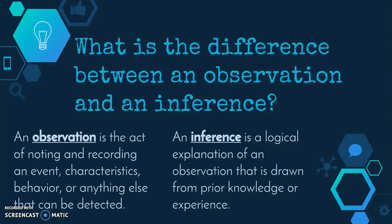So what's the difference between an observation and an inference? Observations are the things that you could see and were fact — the act of noting and recording an event, characteristics, behavior, or anything else that can be detected. No one can argue about the observations that you've made because you can show it using evidence. An inference is a logical explanation of an observation that is drawn from prior knowledge or experience. The inference is going to be an attempt to explain the observation that you've made, often justifying what you're stating using the evidence from your observation.